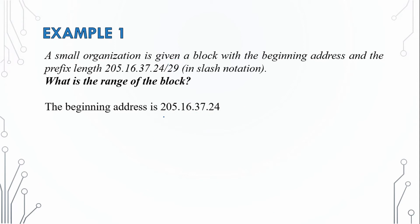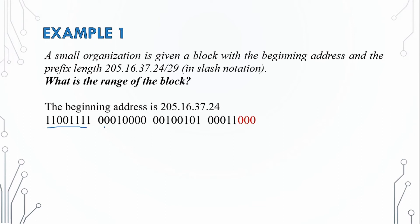We have to convert the beginning address. We have 29 bits for the network portion. We write out the bits for each octet: the first three octets account for 24 bits, and the remaining 5 bits come from the fourth octet. The last 3 bits of the address are the host bits.